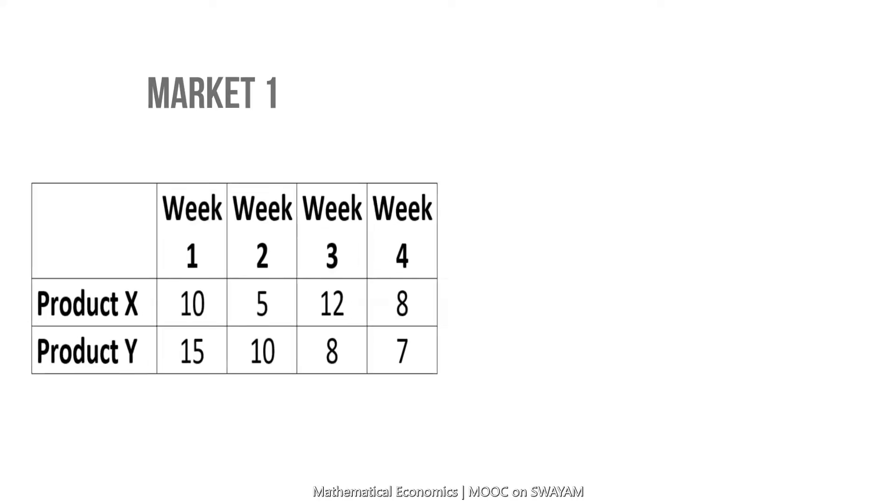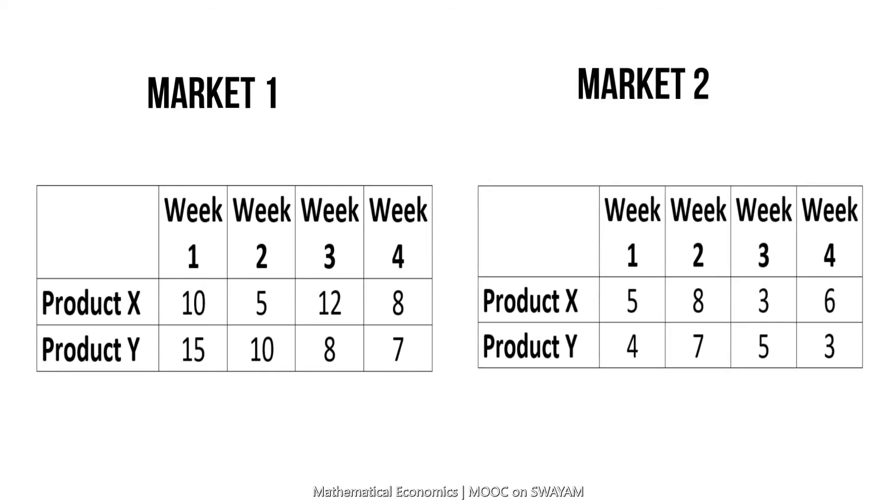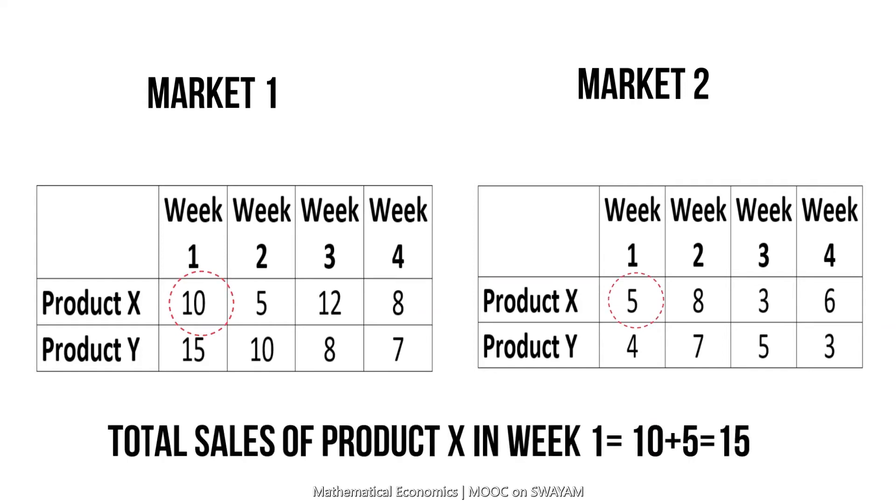For example, the total sales of product 1 in both markets in week 1 is equal to 10 plus 5 equal to 15.